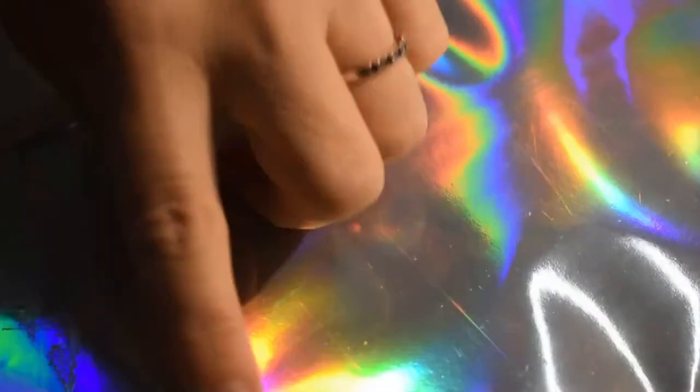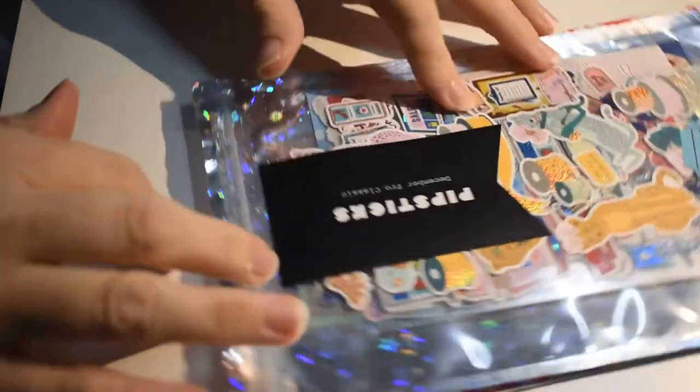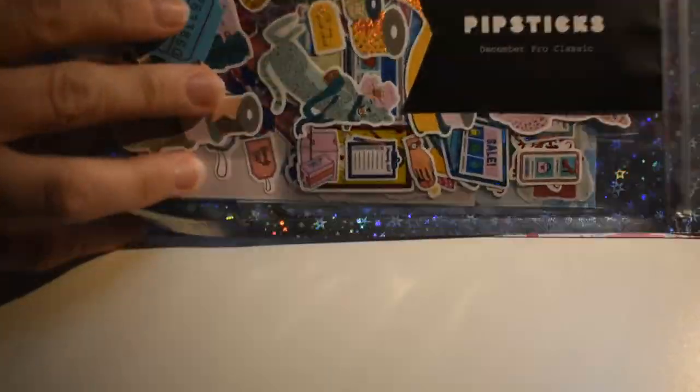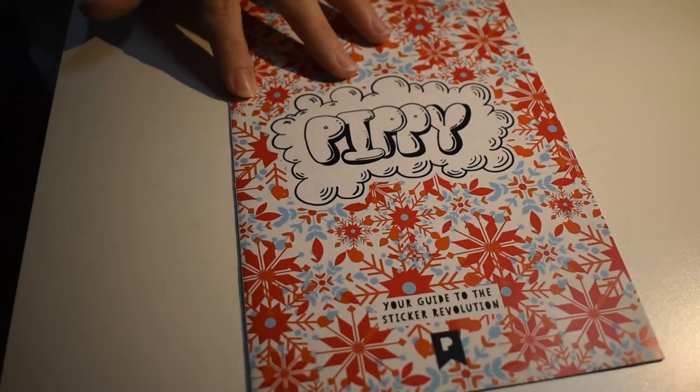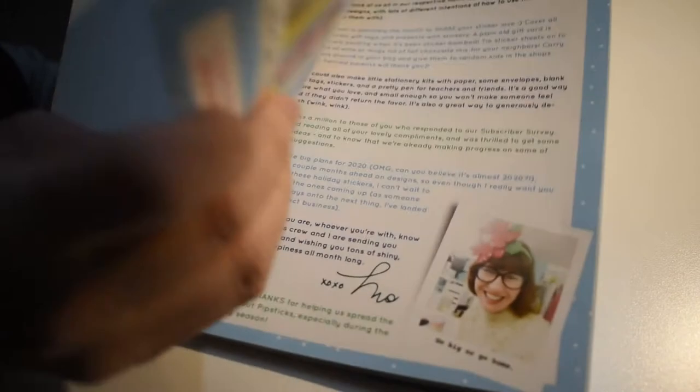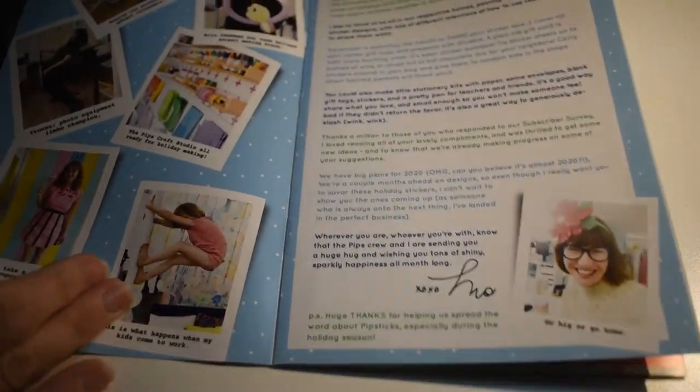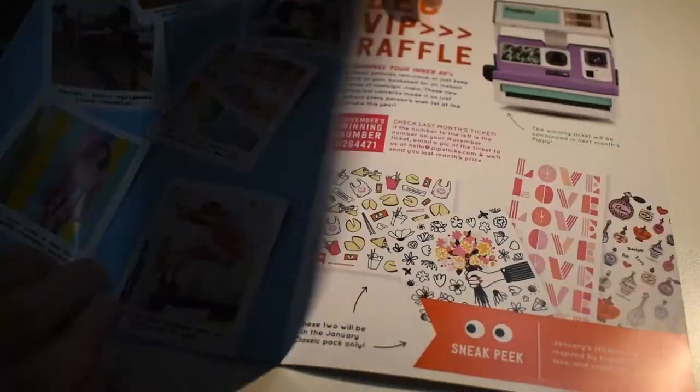Alright, so let's get started and find out what we have. I love this holographic envelope. I love seeing it when it shows up. That's what I'm looking at for December. First of course there is Pippi, their monthly sticker guide. It will tell you the winning prize from last month's ticket. So I hope you held on to that, and you get another one for this month.